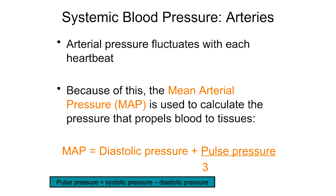If the MAP is too low, we'll have problems with blood flow to tissues and organs. If the MAP is too high, we'll have problems with damage to blood vessels, which can lead to heart attacks, strokes, and clots. There is a range in which we want blood pressure to stay, and we can calculate the average pressure by using the mean arterial pressure equation.